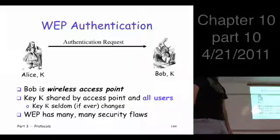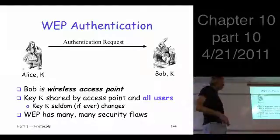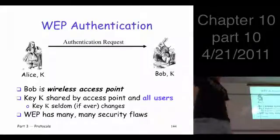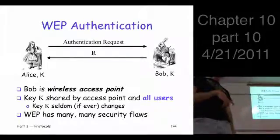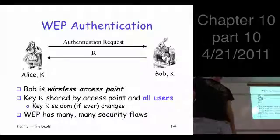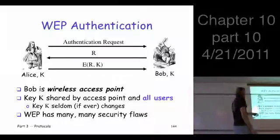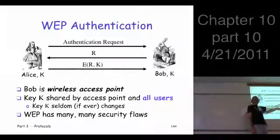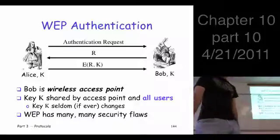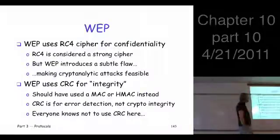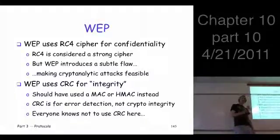Here's the basic authentication protocol. The client shows up, and the access point says 'I want to authenticate.' It sends a challenge. What do you do with that challenge? Encrypt it and send it back. You have to know the key K, and it can verify that you know the key K. So you're in. There's nothing wrong with that except for the shared key issue. You're not authenticating the access point — you're just authenticating the client.